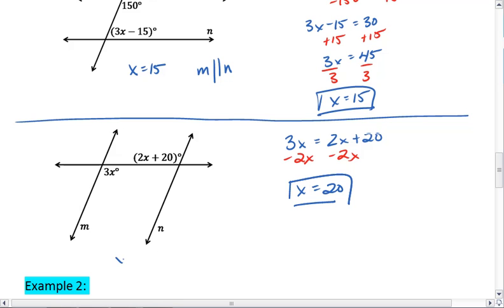Thus, if x equals 20, we'll end up with congruent alternate interior angles, allowing us to conclude that m is parallel to n.